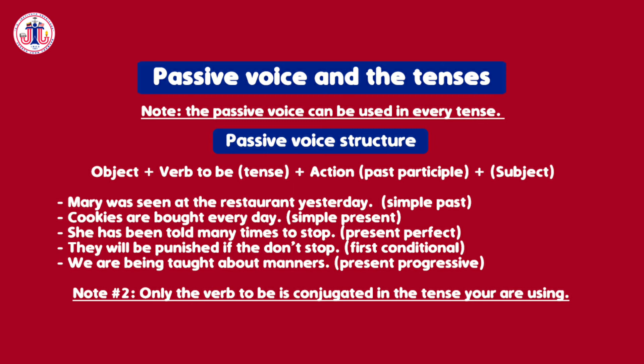'We are being taught about manners' — that's the present progressive; 'are being' is in the present progressive and 'taught' is in the past participle. An important note: only the verb 'to be' is conjugated depending on the tense, while the action that the object receives is always in the past participle.